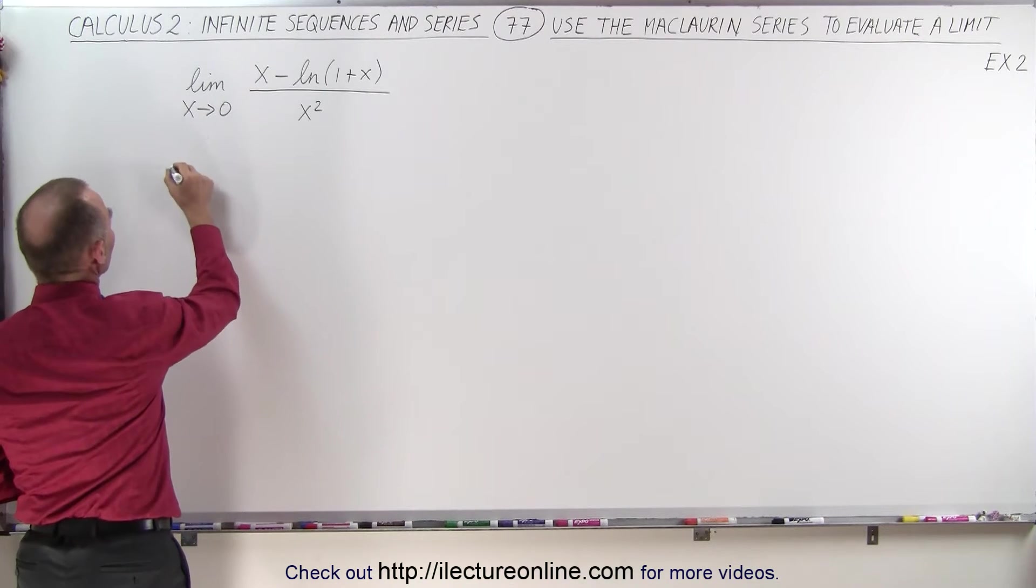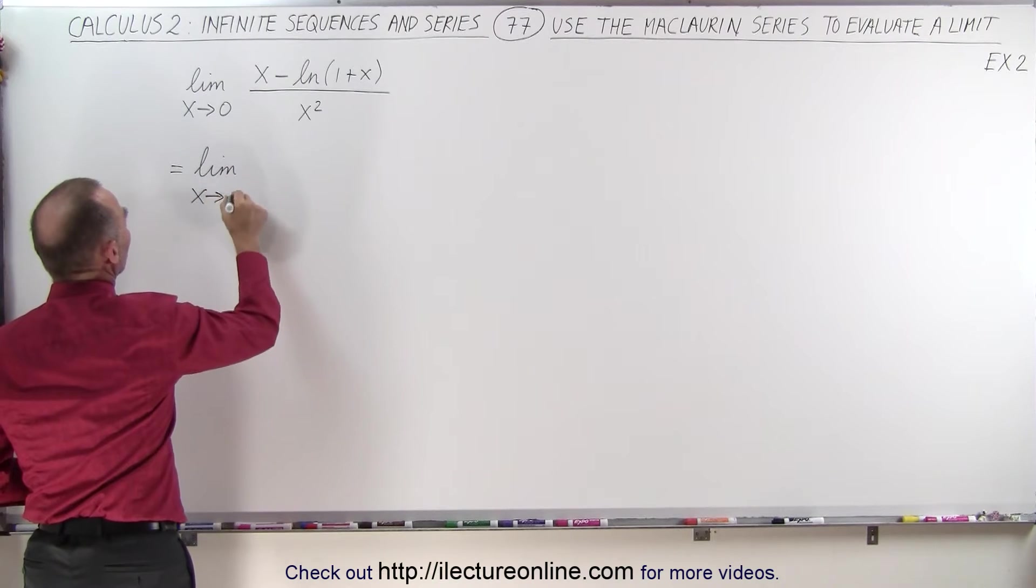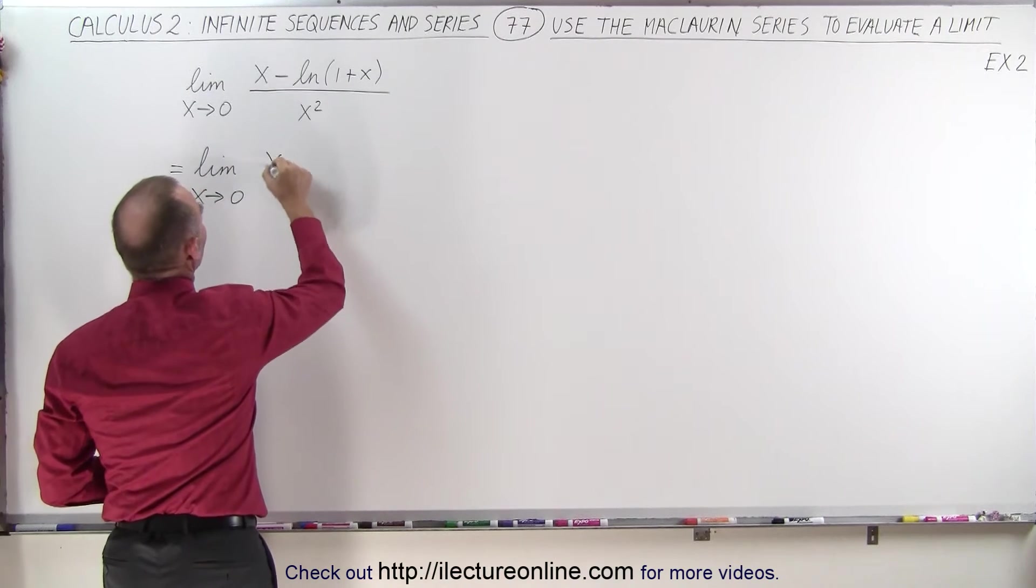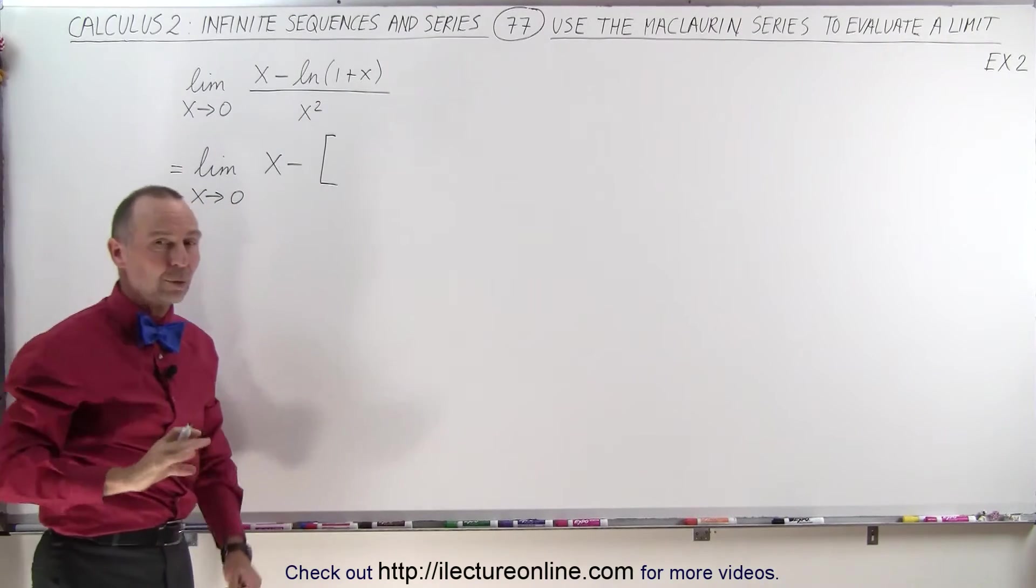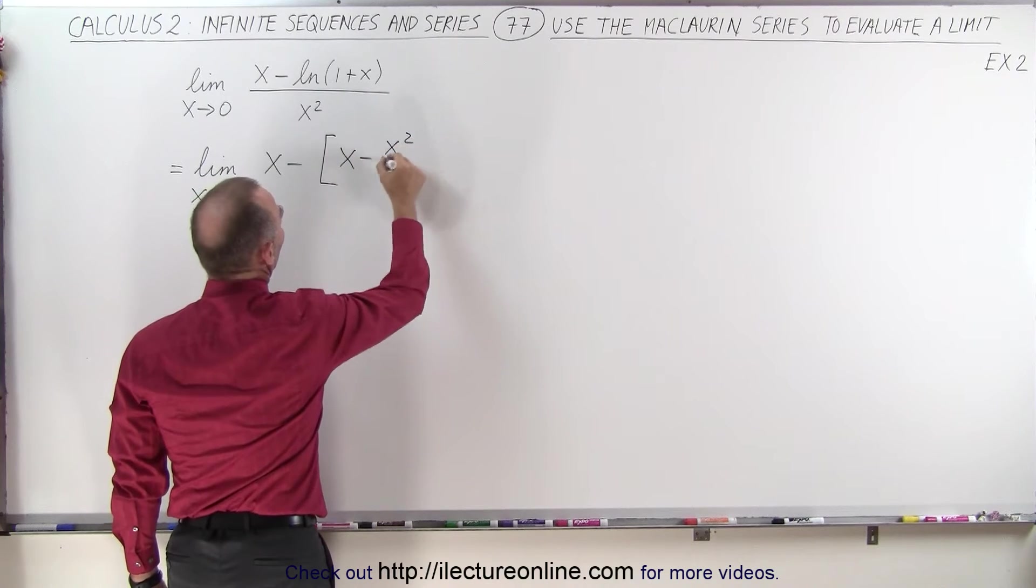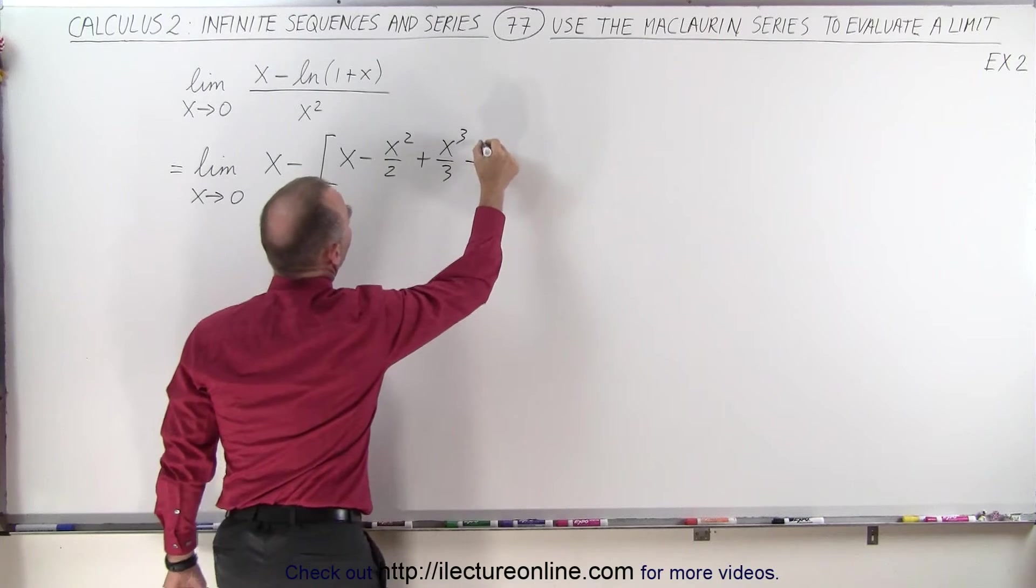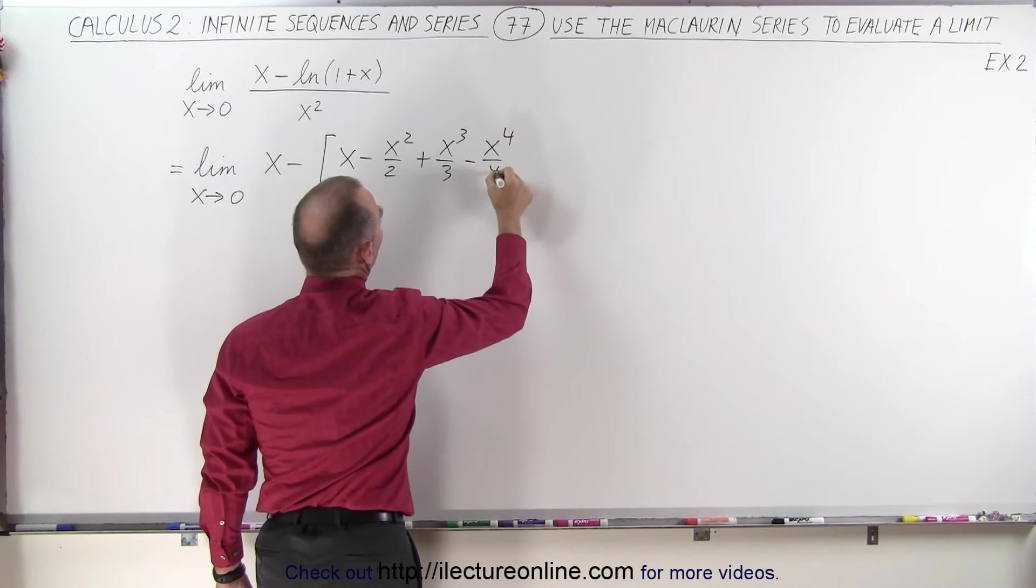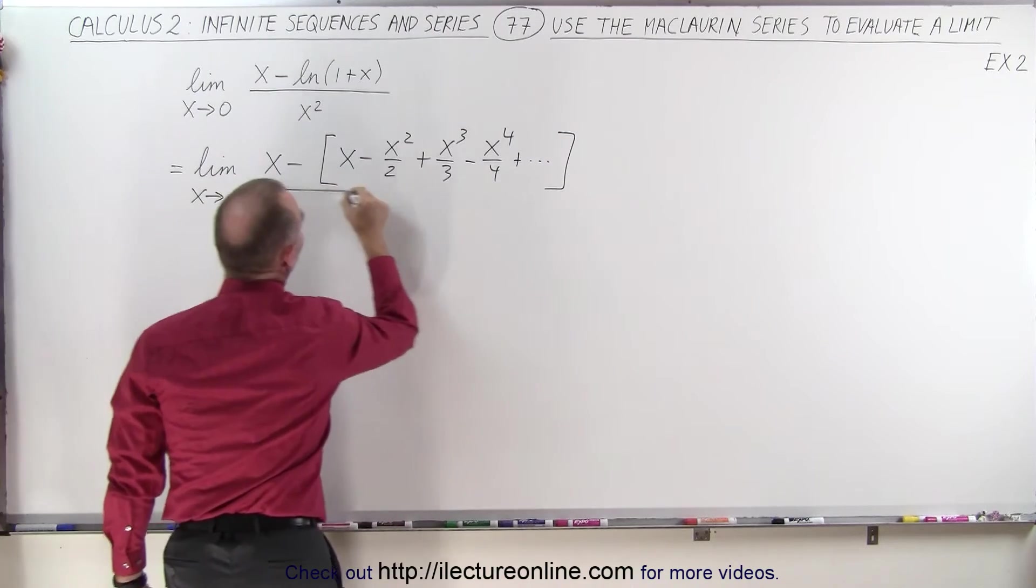So this can be written as follows. This is equal to the limit as x approaches 0 of x minus, and instead of writing the natural log of 1 plus x, we're going to write out the Maclaurin series, which is x minus x squared over 2 plus x cubed over 3 minus x to the 4th over 4 and so forth, and the whole thing divided by x squared.